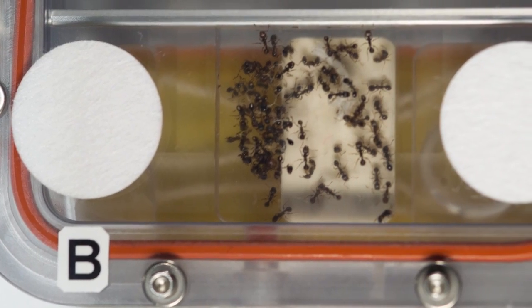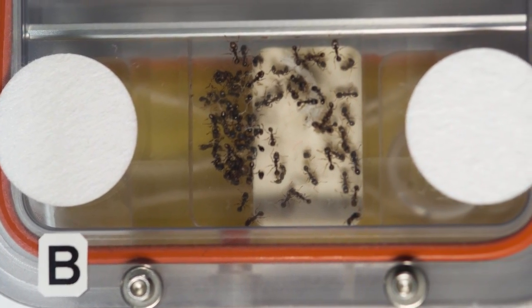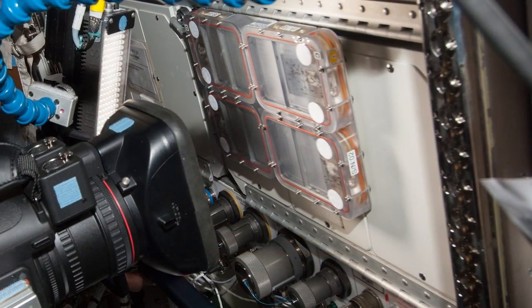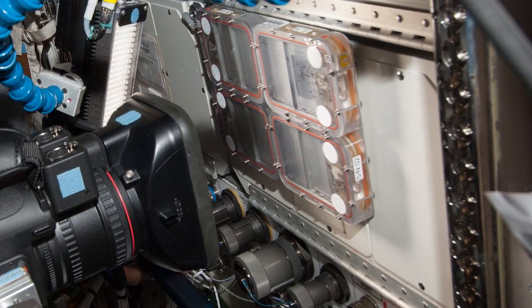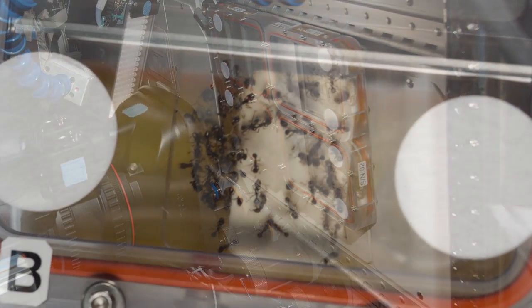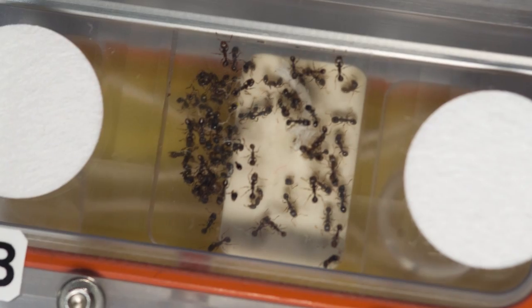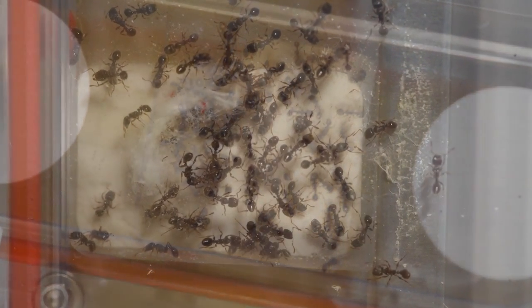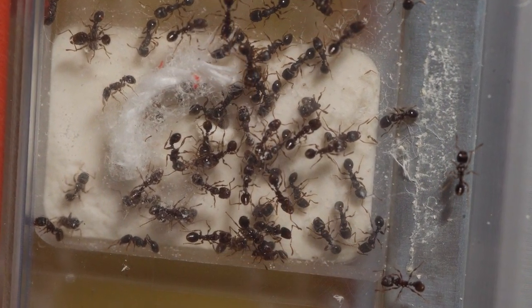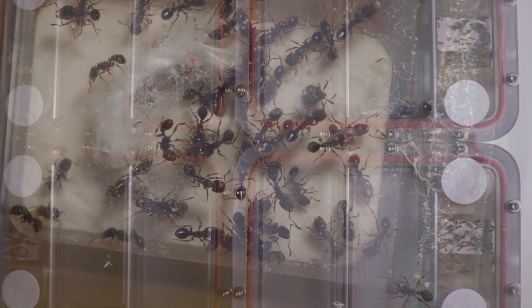And so what we're using are common pavement ants. So the common pavement ant is found all over the United States, all over, probably all over the world. They're commonly on sidewalks or you might see them around foundations of buildings.